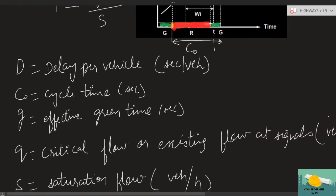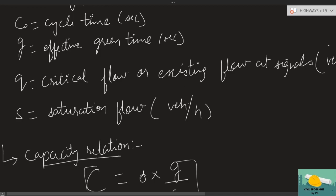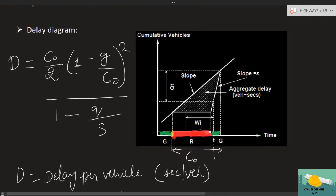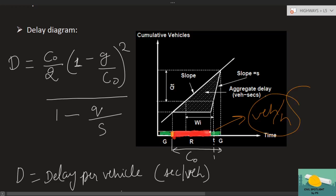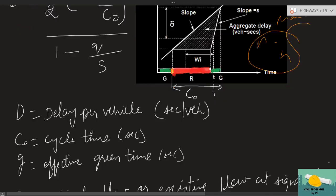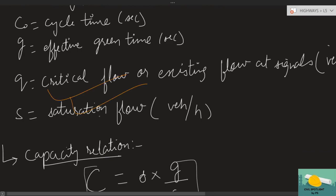S is the saturation flow in vehicles per hour. For those who haven't seen my previous lecture, let me briefly explain: saturation flow is the number of vehicles that would pass through a particular intersection at maximum capacity if there were no red phase — suppose for a full one hour the signal stayed green. The maximum number of vehicles that would pass under those conditions is the saturation flow.